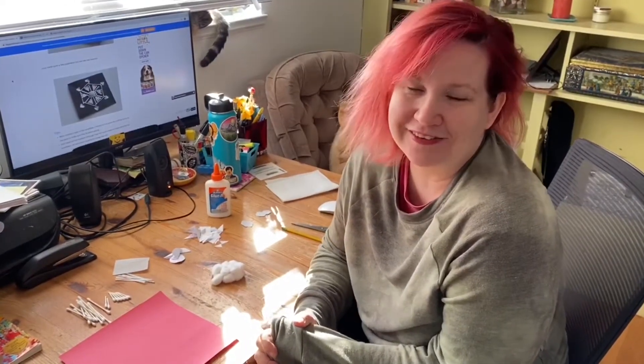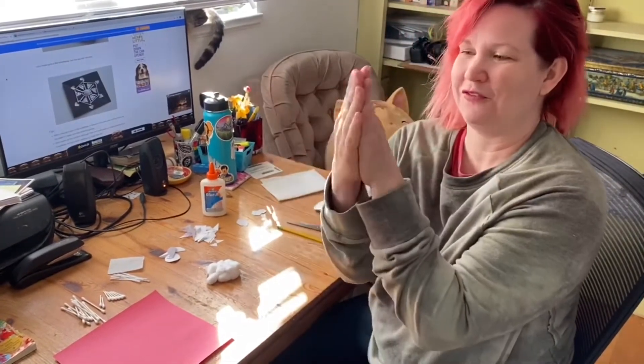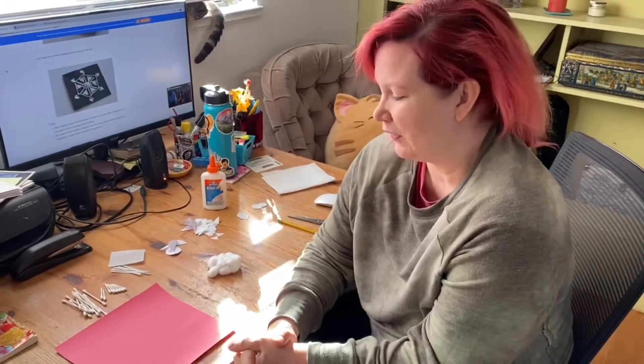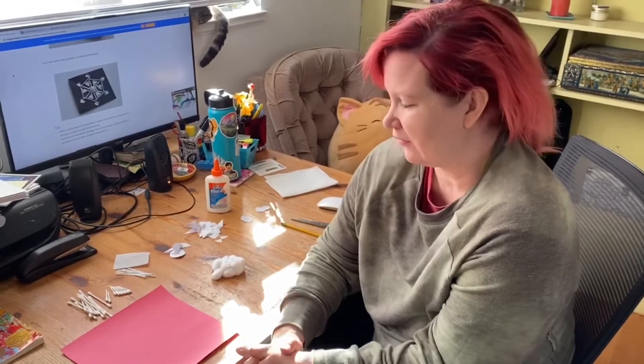The cool thing about snowflakes is that they have six sides and all the sides are the same. If you fold a snowflake, imagine a snowflake as a piece of paper, if you fold it in half, it's going to be the same on each side. So I find that very cool and I thought that today we could play with some symmetry to make some snowflakes.